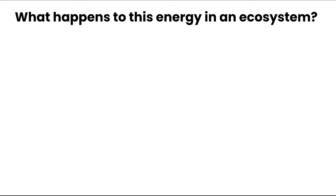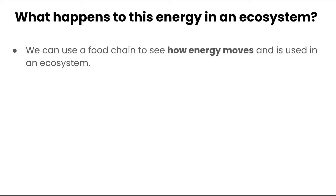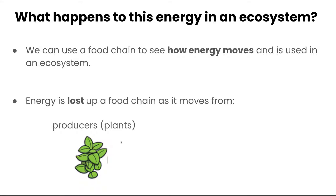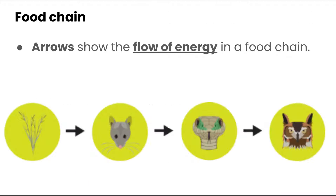What happens to this energy in an ecosystem? We can use what we call a food chain to see how energy moves and is used in an ecosystem. It's really important to point out that energy is lost as we go up a food chain. Energy moves through our producers, or plants. Looking at a food chain, we use arrows to show the flow of energy — from the plant to the mouse, then from the mouse to the snake, and then from the snake to the owl.